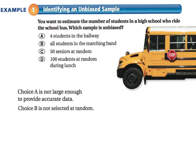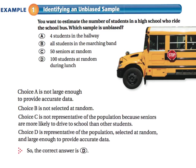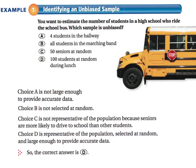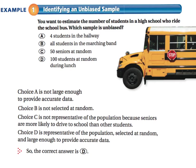Choice C says 50 seniors at random. You've randomly chosen 50 seniors, but choice C is not representative of the population because seniors are more likely to drive to school than other students. Choice D — 100 students at random during lunch — would be a representative of the population. You've selected a random group that could be freshmen, sophomores, juniors, and seniors, and it's large enough. So the correct answer is D.